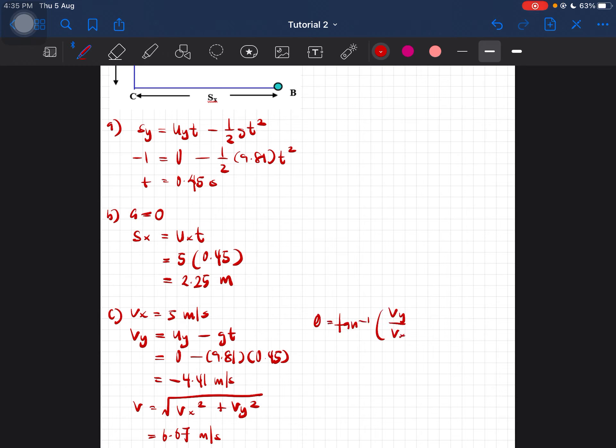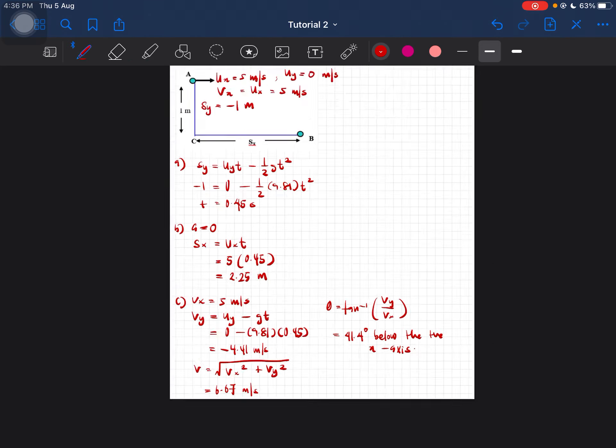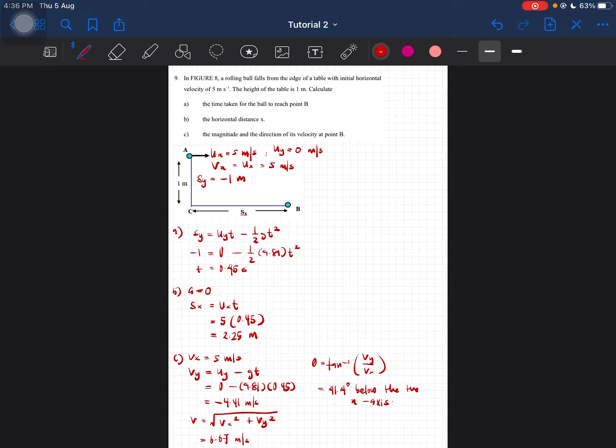Just substitute into the formula, calculate it, you'll then get 41.4 degrees. So the 41.4 degrees means it is below the positive x-axis. Okay, so that is our question nine.